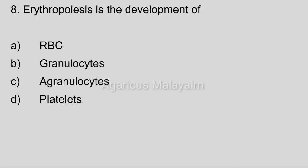Eighth question: Erythropoiesis is the development of — Option A: RBC. Option B: granulocytes. Option C: agranulocytes. Option D: platelets. Correct answer: Option A, RBC.